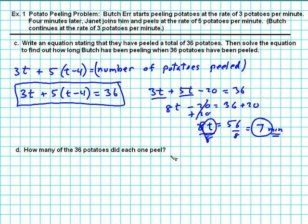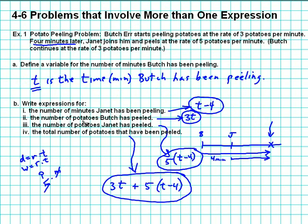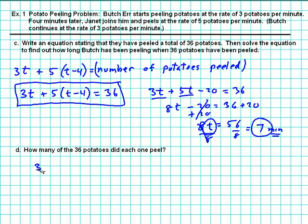How many of the 36 potatoes did each one peel? Let's go look at the previous page. The number of potatoes that Butch peeled was 3t. So 3t is how many Butch peeled. We now know t is 7, so 3 times 7, which is 21 potatoes.